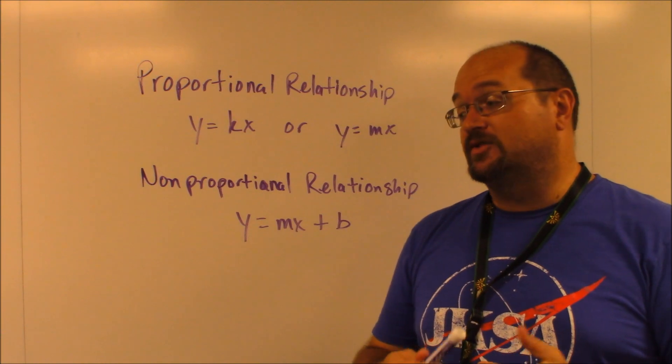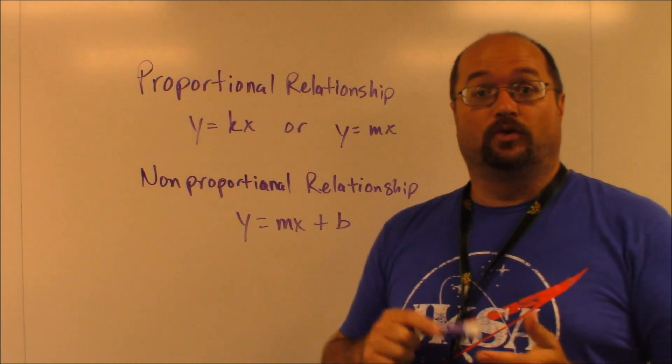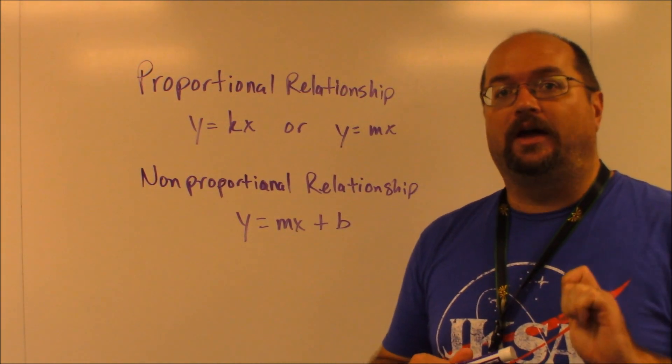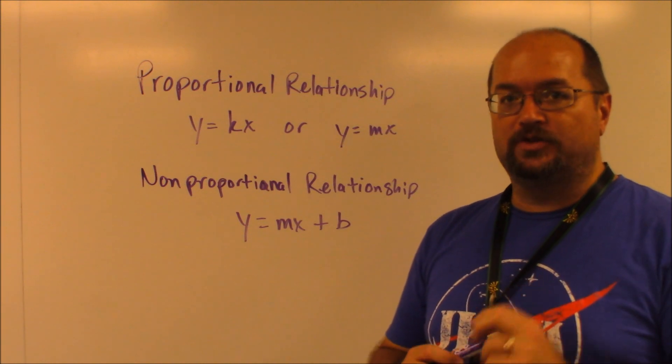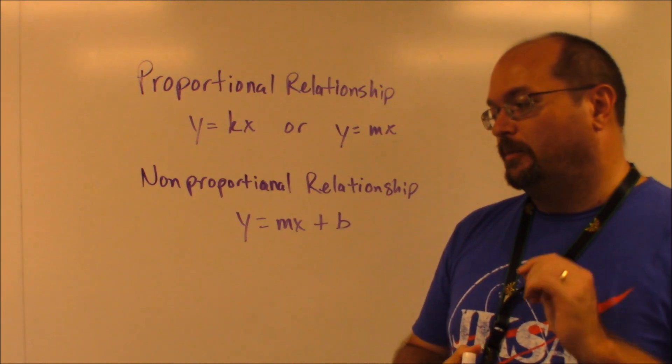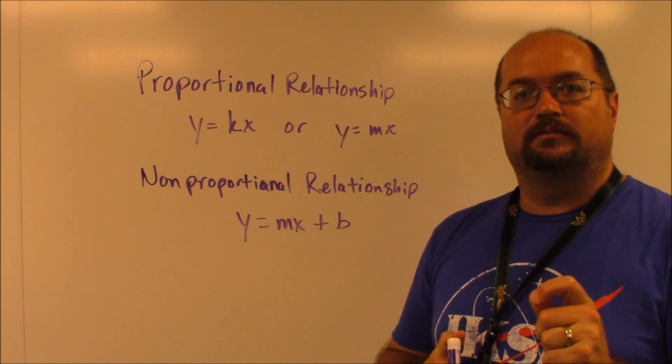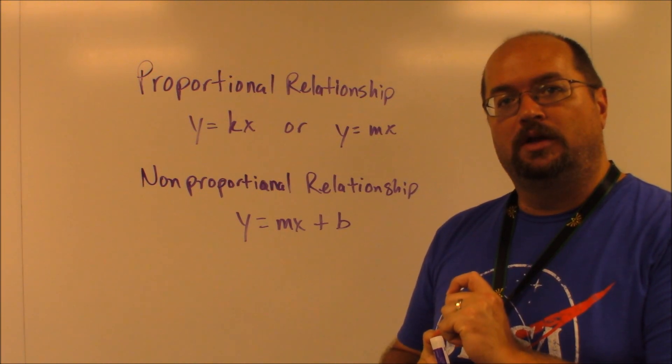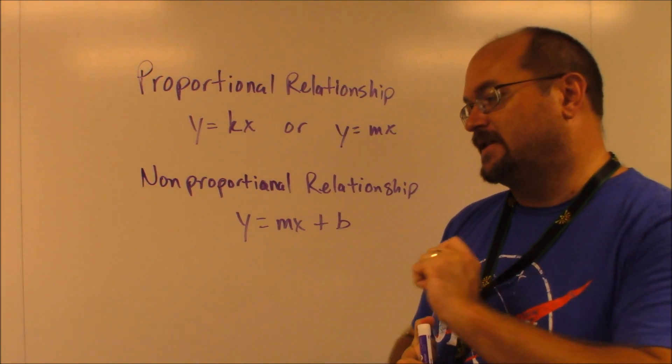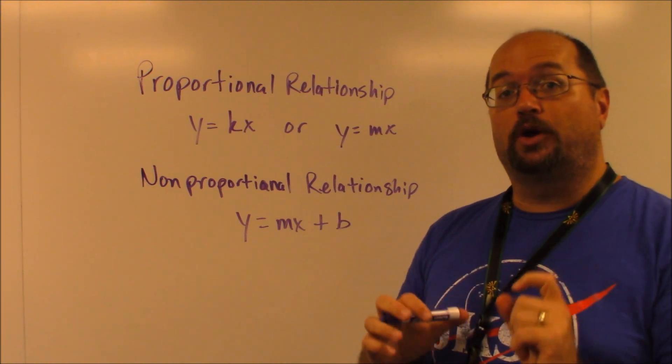So hopefully you chose answer choice H for your correct answer. Now let's talk about why because this was a little bit tricky because they put two numbers in answer choice H. But what I want you to key on is both of those were rates. It was both per hour. So yes, it was $100 for this and $10 for this, but they were both per hour.